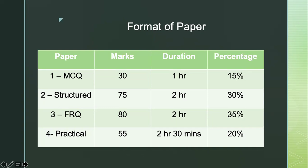Paper 3, free response question. Candidates are required to choose either or in section B. There will be a total of 80 marks. Duration of the paper is two hours. Percentage, 35%.